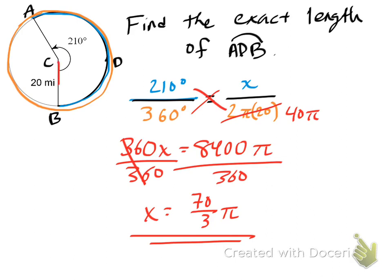Now the unit here, if this is given to us in miles, then the length is also a linear measurement in miles. And there's our arc length.